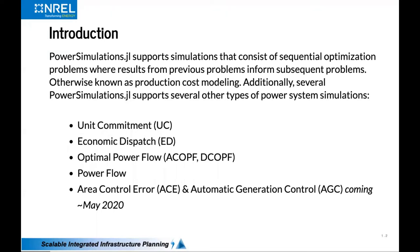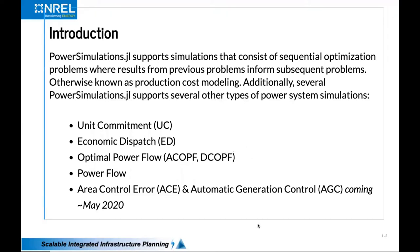PowerSimulations.jl is all written in Julia. The main set of capabilities are aimed at production cost modeling, encompassing unit commitment and economic dispatch — where you may not be running sequential optimization problems but just a simple single-pass multi-period optimization. It also includes optimal power flow through an integration with PowerModels.jl, supporting 36 different formulations of AC optimal power flow, full nonlinear AC, as well as standard linear DC approaches.